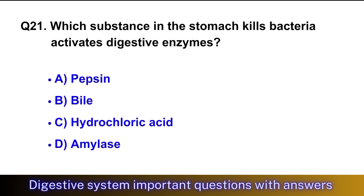Question No. 21: Which substance in the stomach kills bacteria and activates digestive enzymes? The right option is option C, hydrochloric acid.